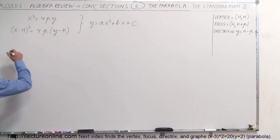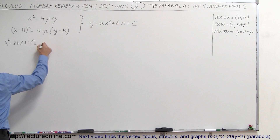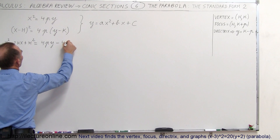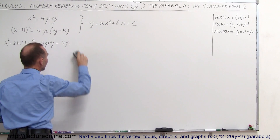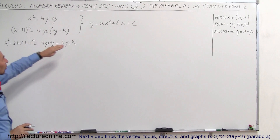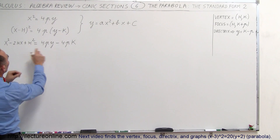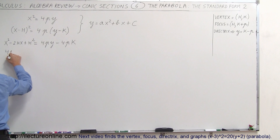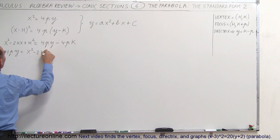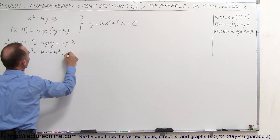We're going to expand this equation. When we do this, it becomes x squared minus 2hx plus h squared, equal to — multiplying this out — 4p times y minus 4p times k. Now we're going to make this equation look like that equation, so I need 4py on the left side. Taking the whole equation and rearranging, we get 4py is equal to x squared minus 2hx plus h squared, and bringing the other term across it becomes positive, plus 4pk.